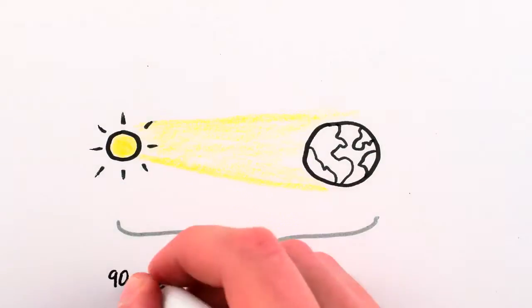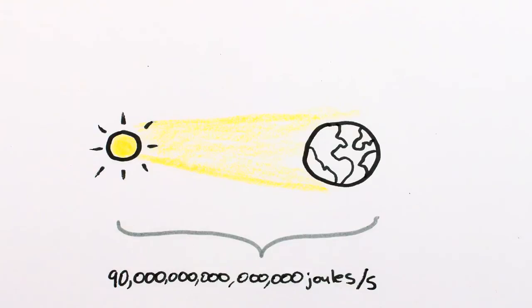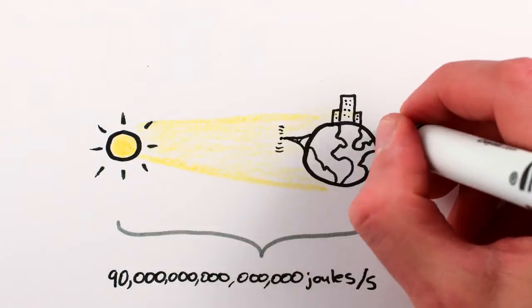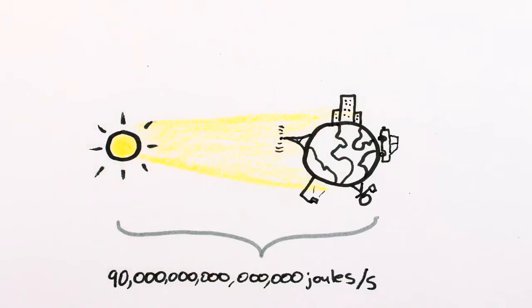The Earth receives about 90 petajoules of energy from the Sun every second. That's a lot, enough to satisfy all human energy needs thousands of times over.